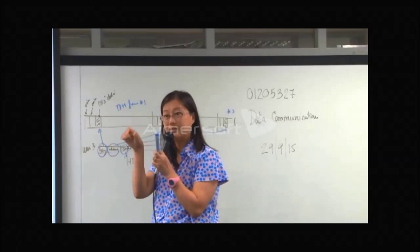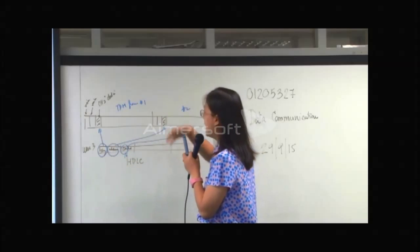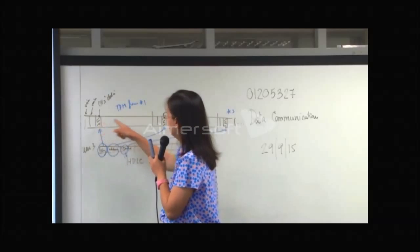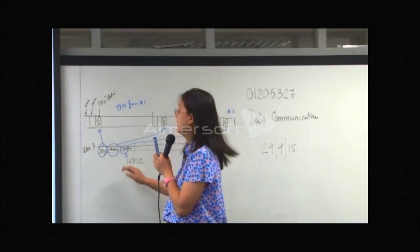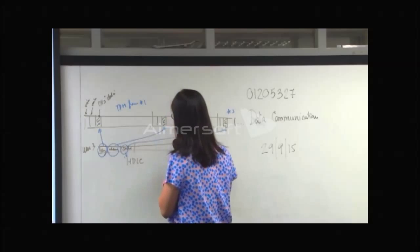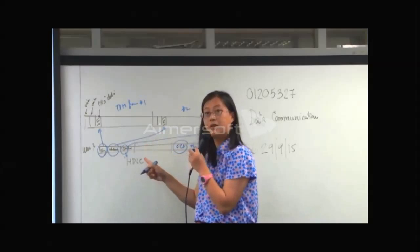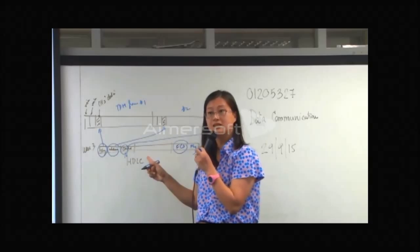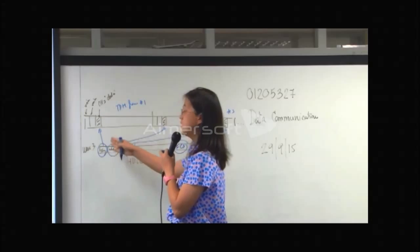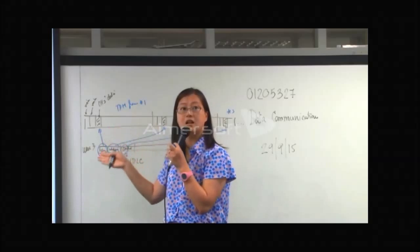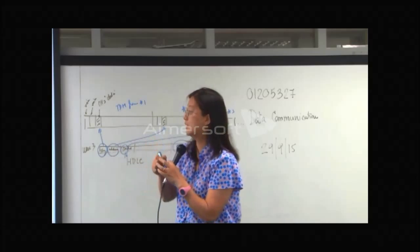At the receiver, when it receives the data from the slot assigned to user three, it can reconstruct the HDLC frame. Once the HDLC frame is reconstructed, it can do error control using the FCS — the frame check sequence — to check whether the data was received correctly. So error control is done on a per-channel basis. Channel three uses error control; channels that don't need it simply don't use it.